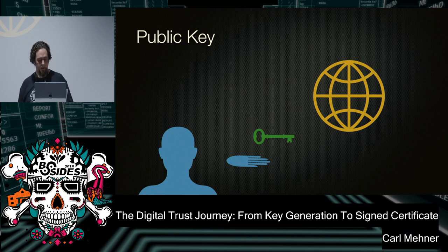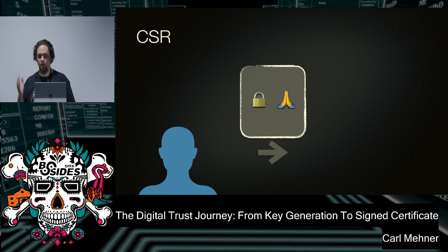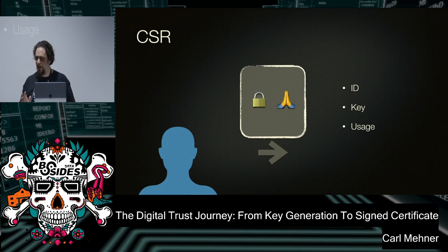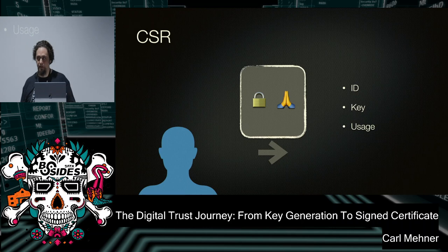Now that we have our keys, we're going to bind it to the ID using something called a CSR. In order to get the request to the certificate authority to sign, we need to create this thing called a Certificate Signing Request. It's just a document that has an ID, it's got the key, and it can have some usage request in it. The CA doesn't have to abide by these requests because it's got a very specific set of steps and a really strict rubric that it has to maintain.